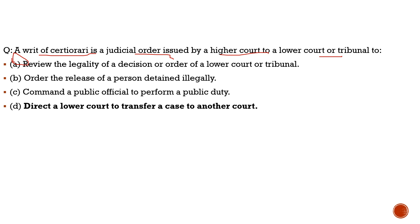Option B: order the release of a person detained illegally — totally incorrect. Option C: command a public official to perform a public duty — totally incorrect. Option D: direct a lower court to transfer a case to another court — this is related to certiorari but incomplete, because certiorari applies not only to lower courts but also to tribunals and other quasi-judicial bodies. Option A is correct and more complete.